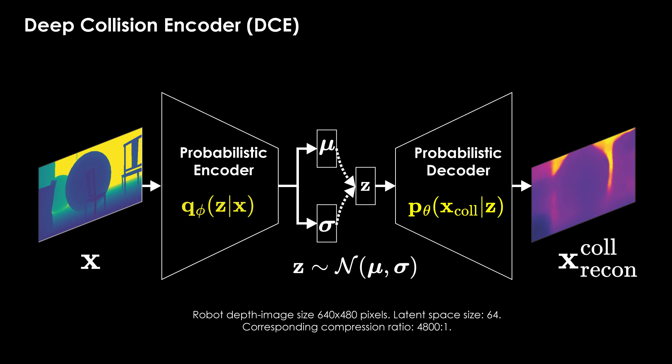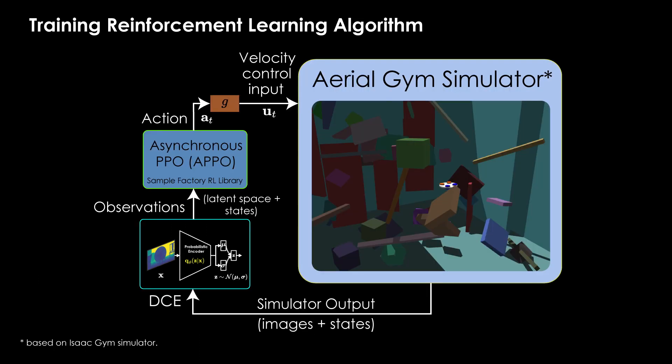The DCE is trained with both real and simulated depth image data to be robust to sensor noise. The latent space size is set to 64 dimensions, corresponding to a compression of 4800 times the size of the depth image captured by the robot. We interface the aerial gym simulator with the DCE and an appropriate learning framework. The DCE encodes the depth images obtained from the simulator into compressed latent representations containing collision information, which are then used to train the reinforcement learning-based policy.